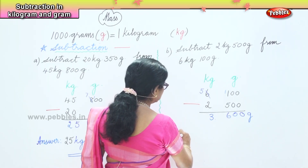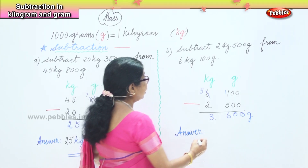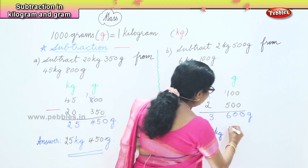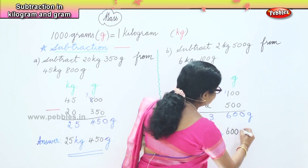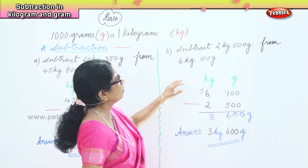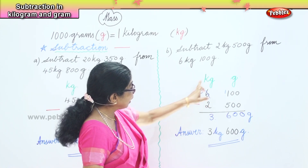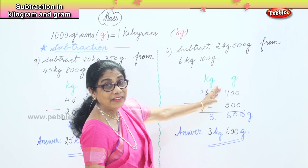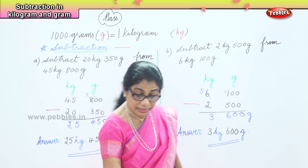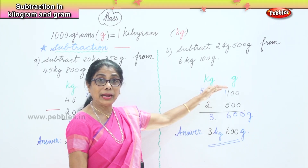So what's our answer? Our answer is 3 kilograms and 600 grams. 11 take away 5 is 6, so 600 grams. 5 kilograms take away 2 kilograms is 3 kilograms. Our answer is 3 kilograms and 600 grams. We learnt today to subtract after placing the numbers in kilogram and gram columns.